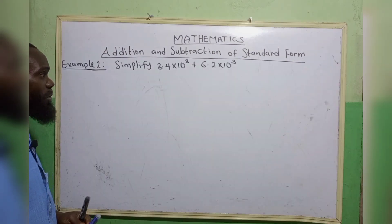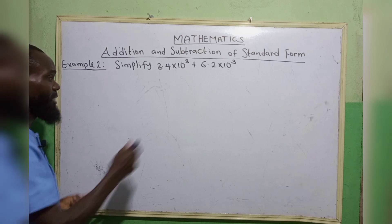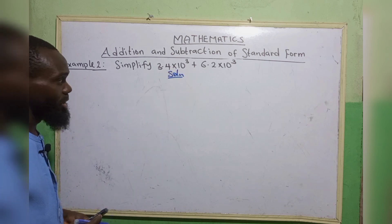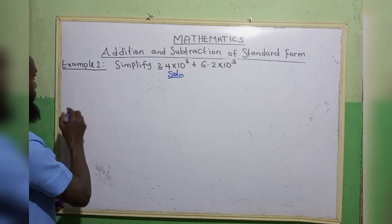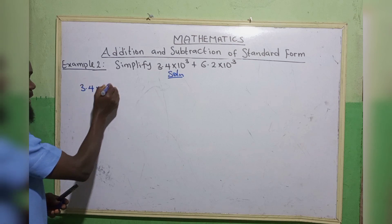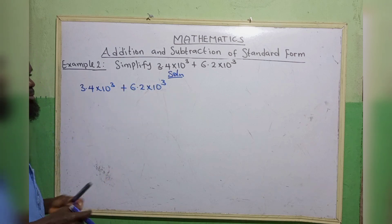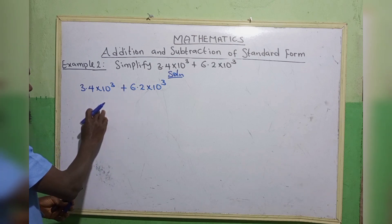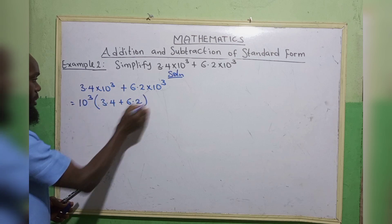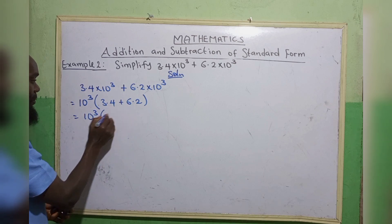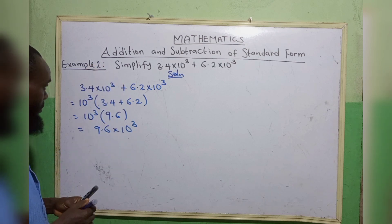Example 2: Simplify 3.4 times 10 to the power 3 plus 6.2 times 10 to the power 3. This is very simple — you just take the common factor, which is 10 to the power 3, common to both, and open your bracket: 3.4 plus 6.2. We get 10 to the power 3 times 9.6, which means 9.6 times 10 to the power 3.